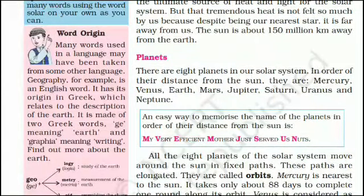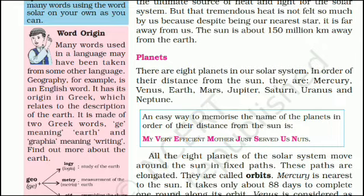Planets: There are eight planets in our solar system. In order of their distance from the sun, they are: Mercury, Venus, Earth, Mars, Jupiter, Saturn, Uranus and Neptune. An easy way to memorize the names in order is: 'My Very Efficient Mother Just Served Us Nuts.' All eight planets move around the sun in fixed paths called orbits. These paths are elongated.